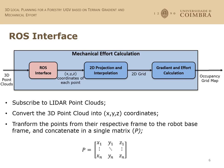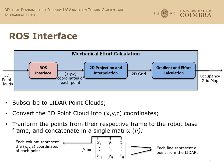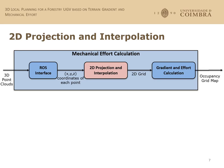In the ROS interface block, we subscribe to the LiDAR point clouds and convert these 3D point clouds into X, Y, and Z coordinates. These points are transformed from their respective frames to the robot base frame and concatenated into a single matrix, where each row represents a point from the LiDAR and each column represents the X, Y, and Z coordinates of each point.